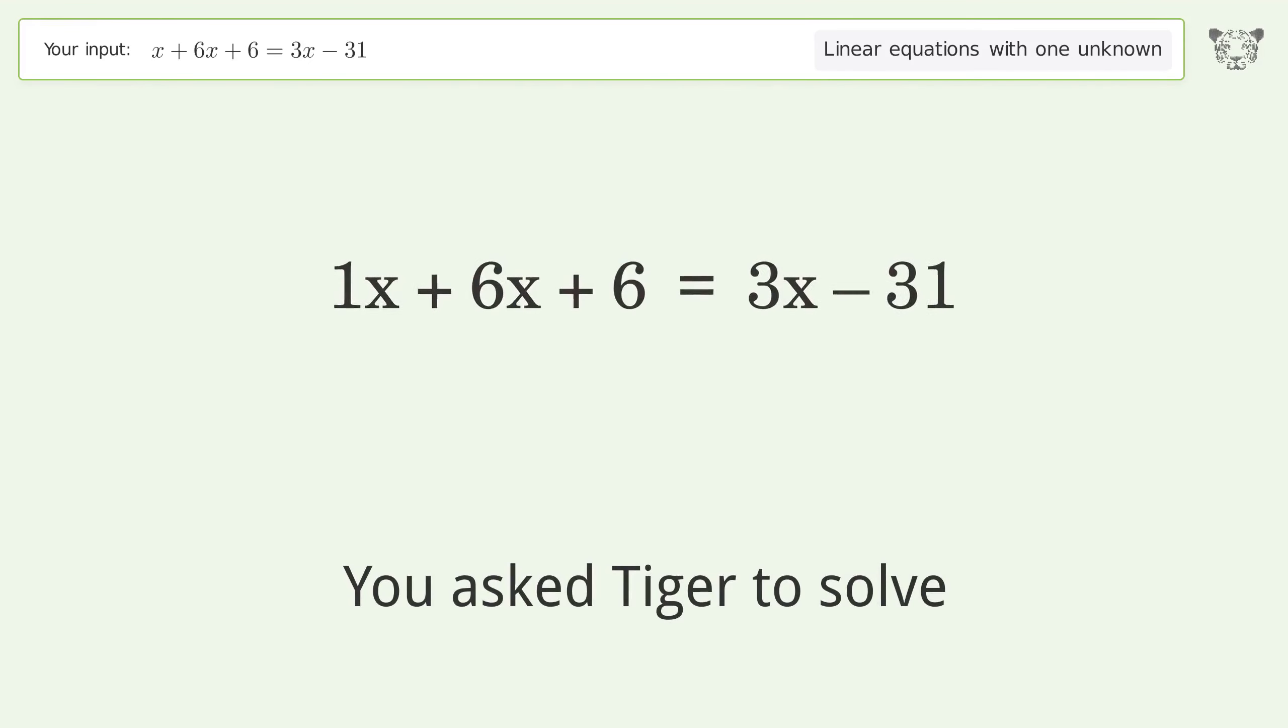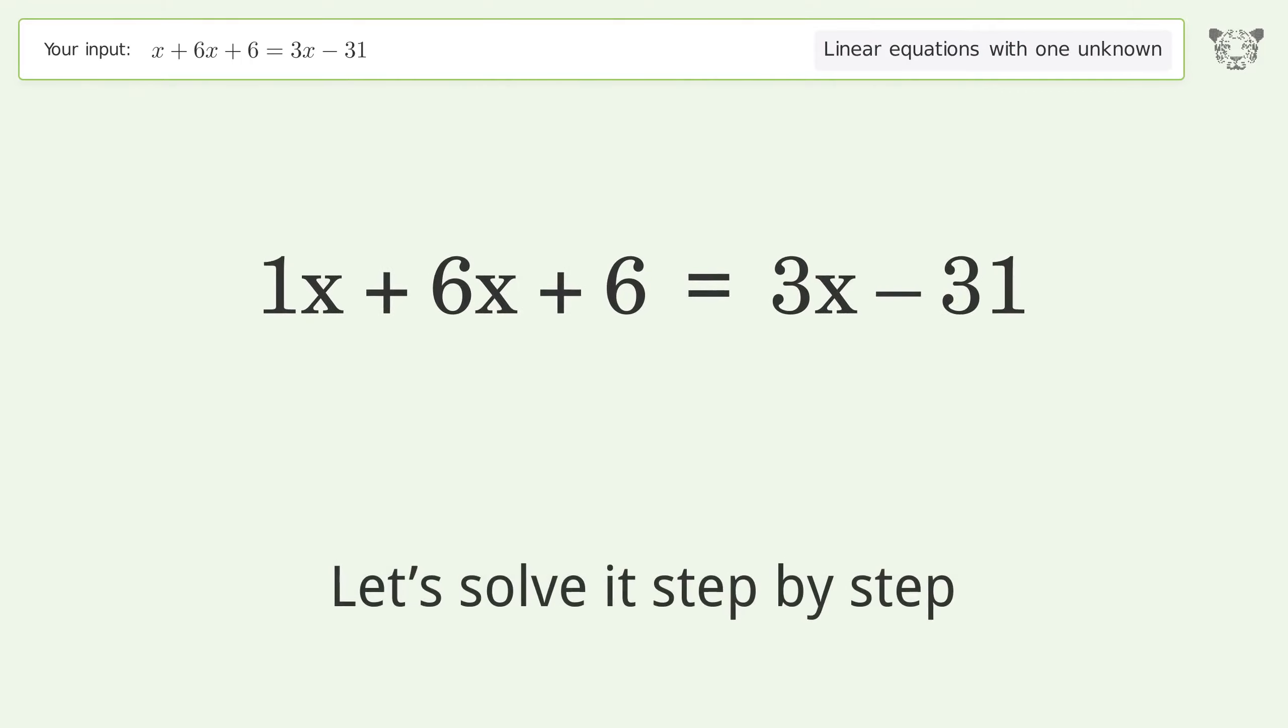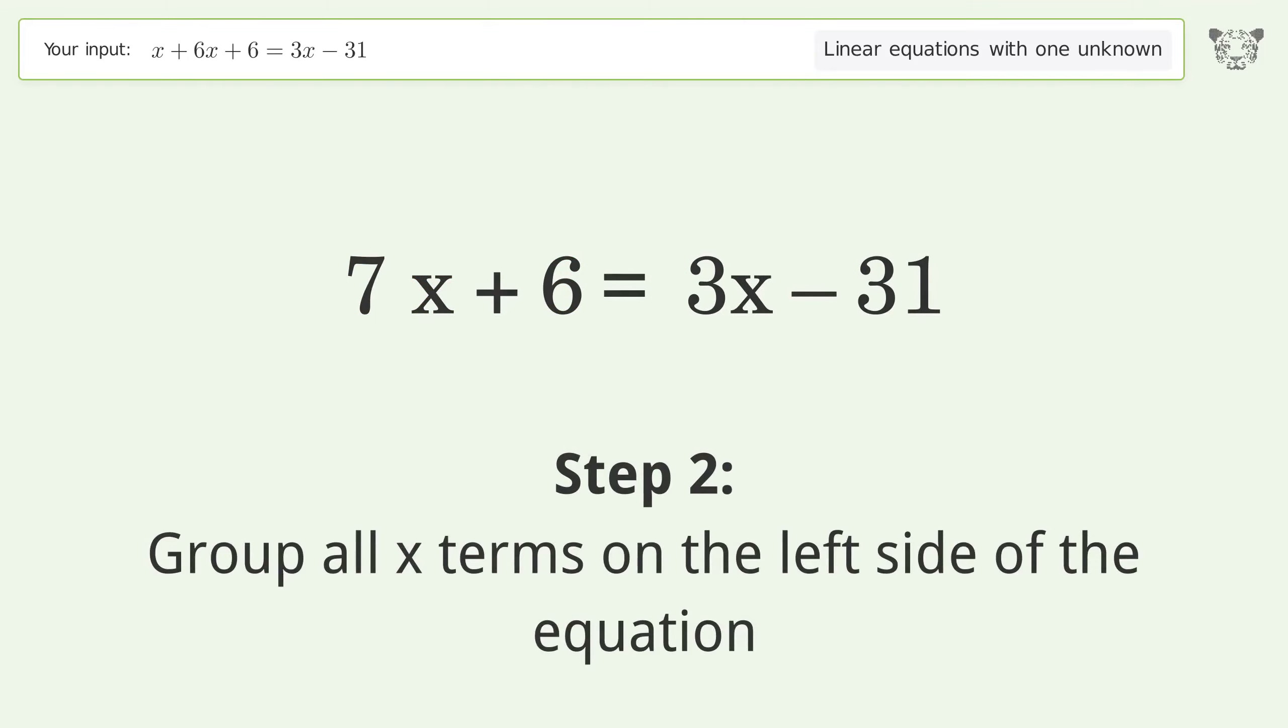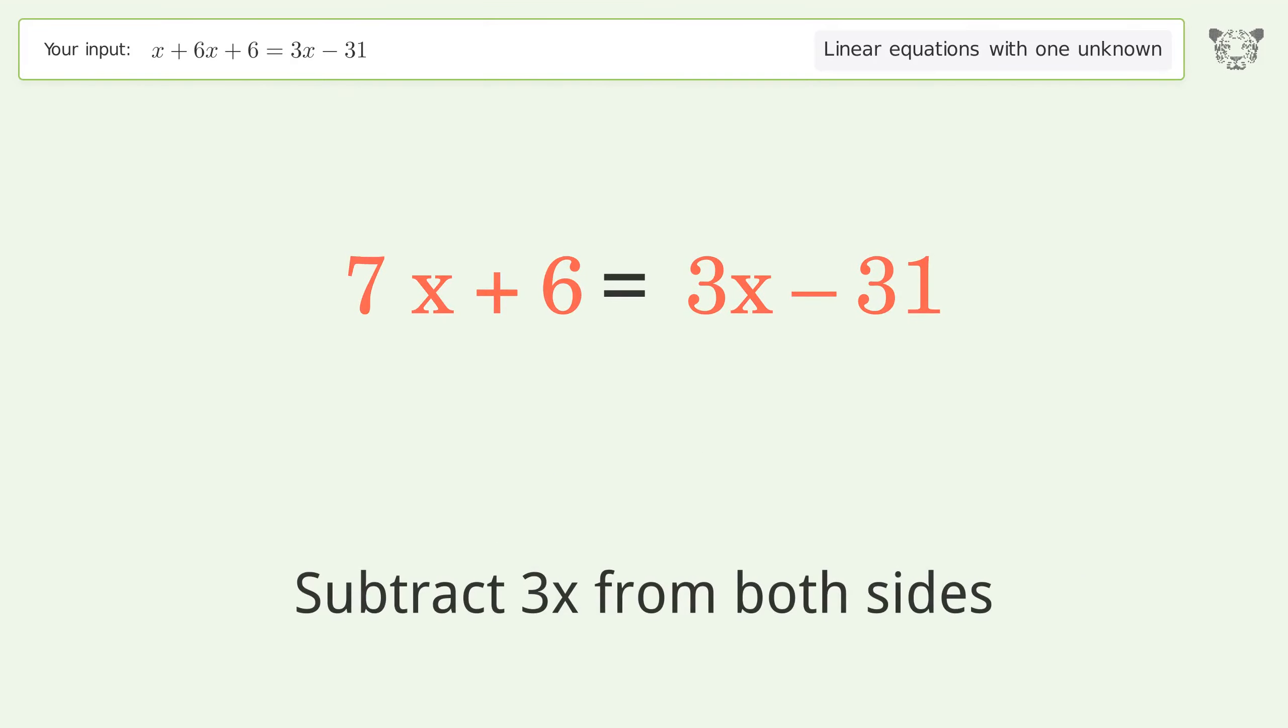You ask Tiger to solve this. It deals with linear equations with one unknown. The final result is x equals negative 37 over 4. Let's solve it step by step. Simplify the expression, simplify the arithmetic, and group all x terms on the left side of the equation. Subtract 3x from both sides.